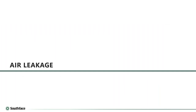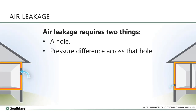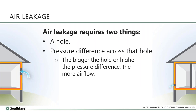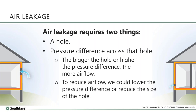In order to have air leakage, you have to have two things: a pathway or a hole, and something that creates a pressure difference across that hole. If you have a bigger hole or a bigger pressure difference, you're going to have more air movement. Likewise, if you can reduce the pressure difference or get rid of the holes — which is the more practical approach — then you can reduce unwanted air leakage. Airflow is measured in CFM or cubic feet per minute, and a cubic foot is one foot by one foot by one foot — about the size of a milk crate.